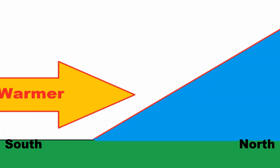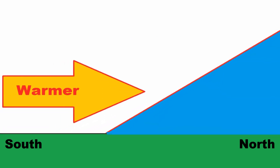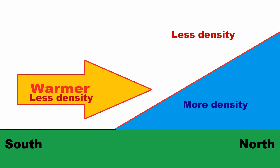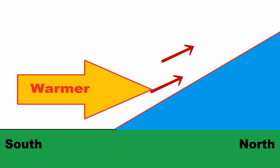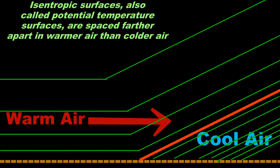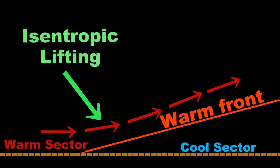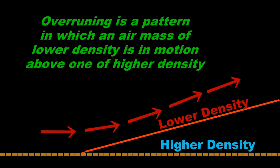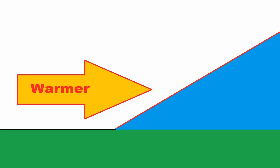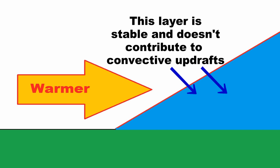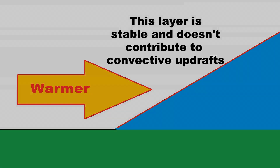Air tends to move into areas with equal density. So for air south of the front to maintain relative density by preserving potential temperature, it must lift over the cool air. This is what's called isentropic lifting, as air moves upward along sloping isentropic surfaces and produces an overrunning pattern over the cool sector. Surface parcels within cooler air have a higher density relative to the overriding air, resulting in their stability and inability to contribute to thunderstorms.